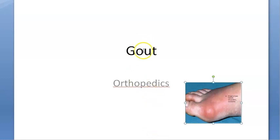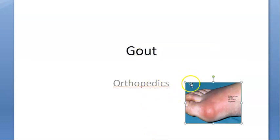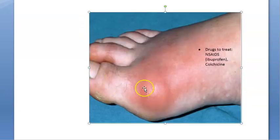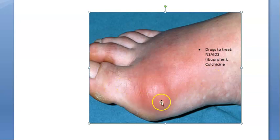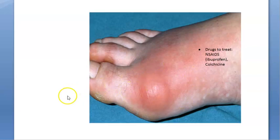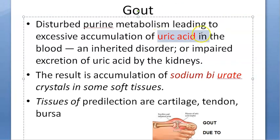Hello, in this video we want to look at gout from an orthopedics perspective. People can come to you with swelling especially in the foot between the metatarsal and phalangeal joint — the MP joint. There is swelling because of the deposit of uric acid crystals.